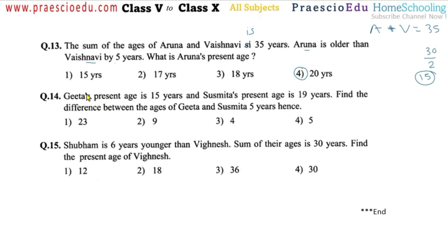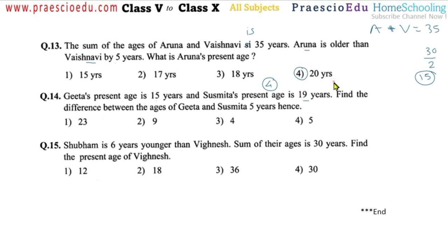Question number fourteen: Gita's present age is 15 years and Sushmita's present age is 19 years. Find the difference between their ages after five years. The difference between ages remains the same throughout life. Currently the difference is 19 minus 15 equals 4. After five years the difference will still be 4. So option number three is correct.